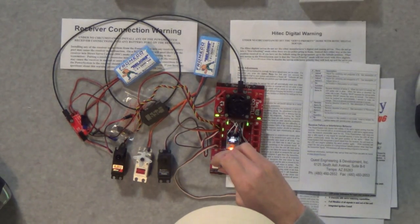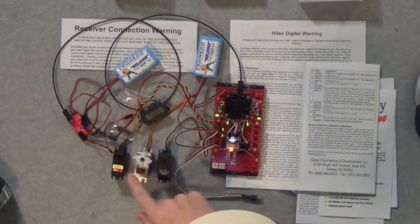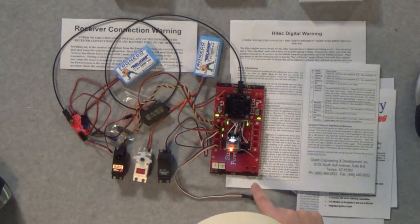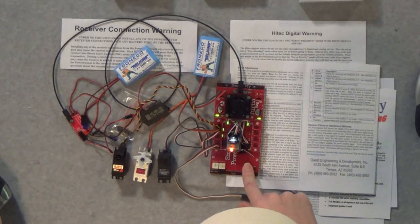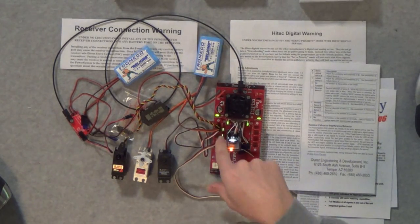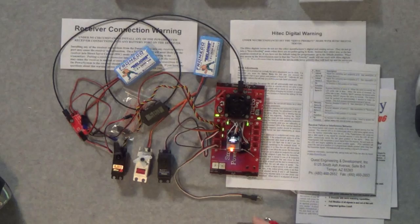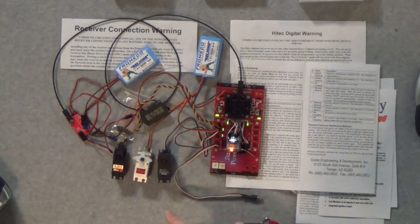Now let's do channel five, which is going to be A. You can see the Hitec is moving in a different direction. Press and hold. It registered to change. And now they're all moving in the same direction the other way.